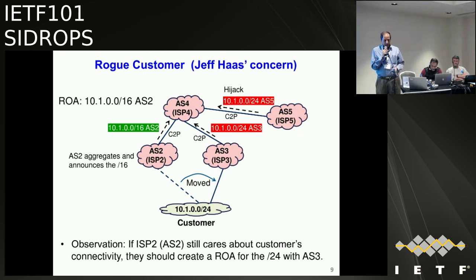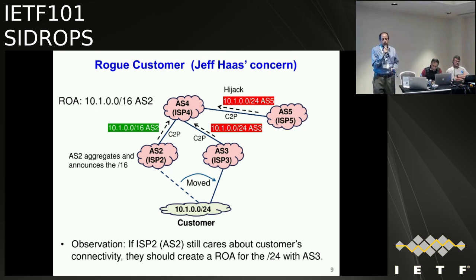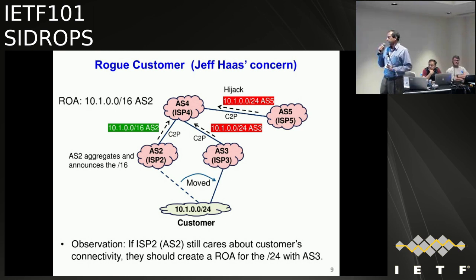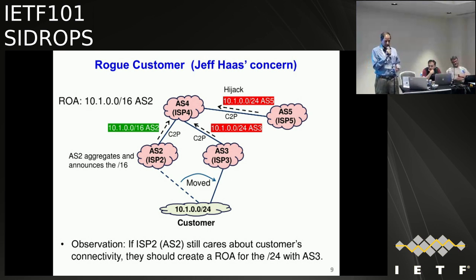The question is: it's a non-paying customer who has stolen a sub-allocation and ran away with it. Should they be punished with non-reachability? Or should ISP2 have some compassion? If they want to be soft toward this customer during a grace period, they can go ahead and create a ROA for the more specific. That is one option ISP2 has.